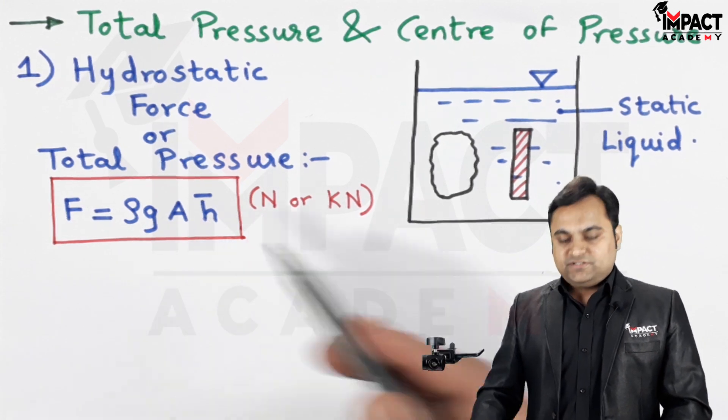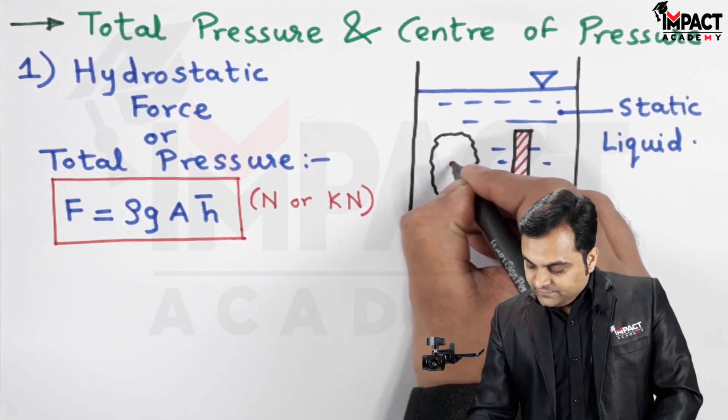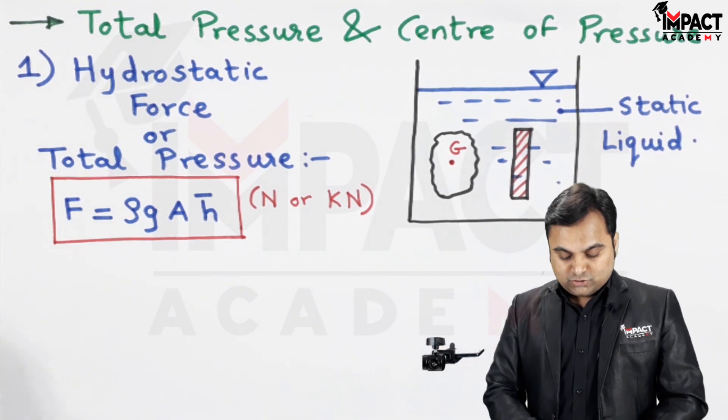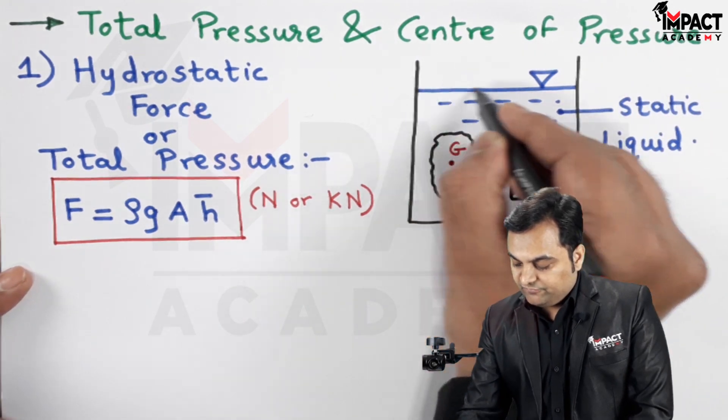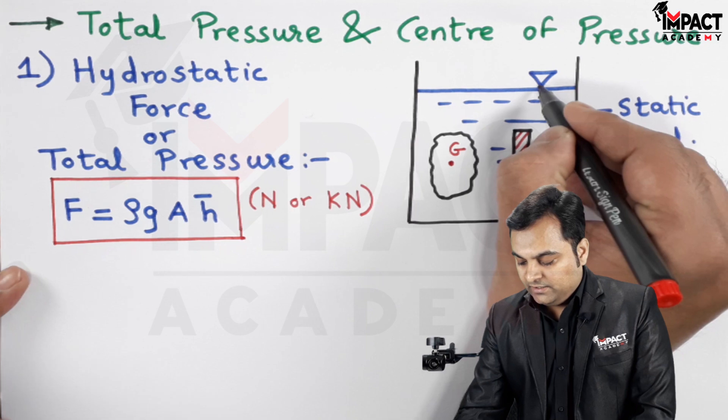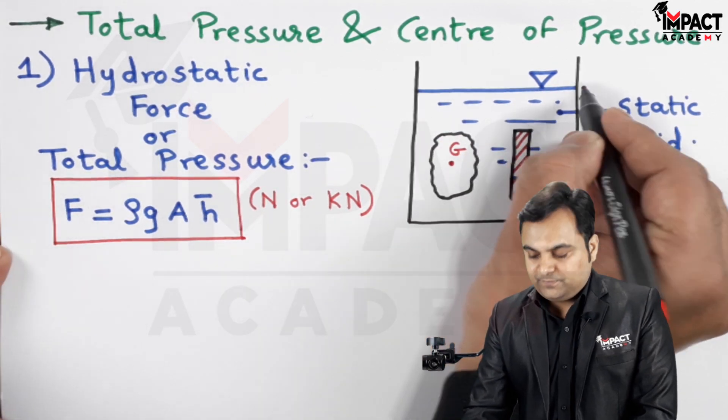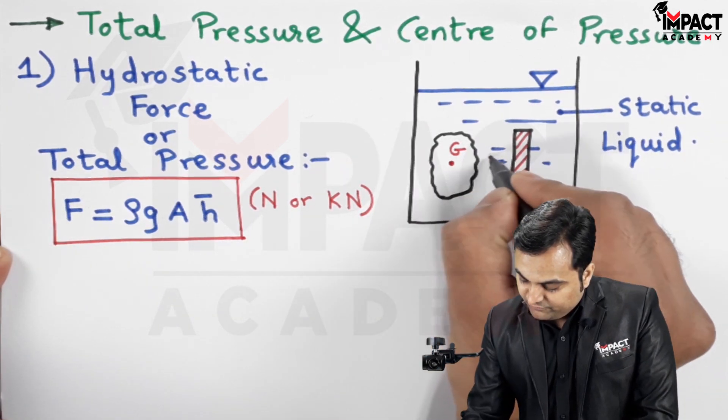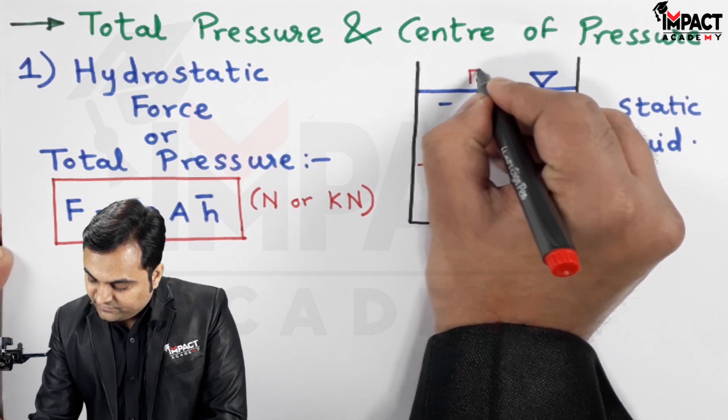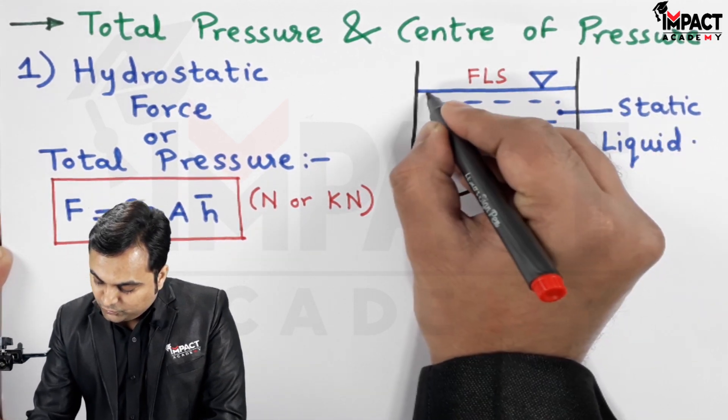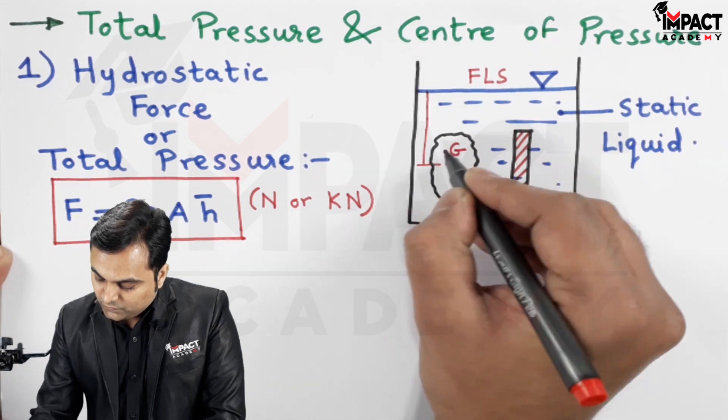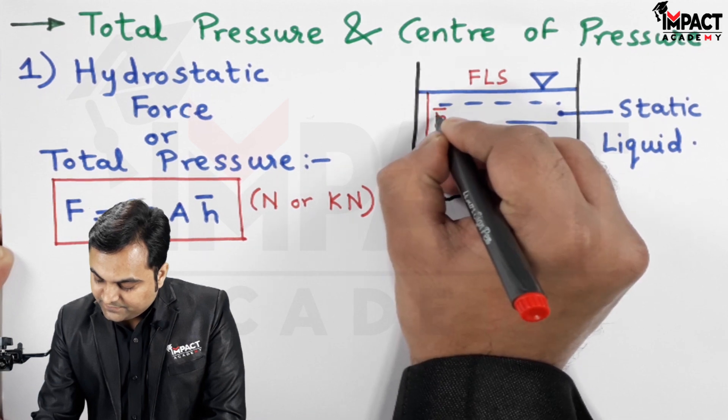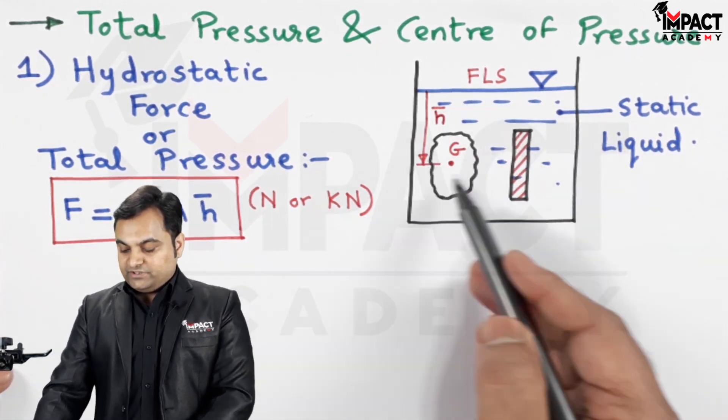Now h bar is the distance. Suppose I am considering that here is the centroid of this plate, so the distance measured from the free liquid surface, denoted as FLS, up to point g which is the centroid of the plate, that distance is called as h bar - distance from free liquid surface to the centroid of the plate.